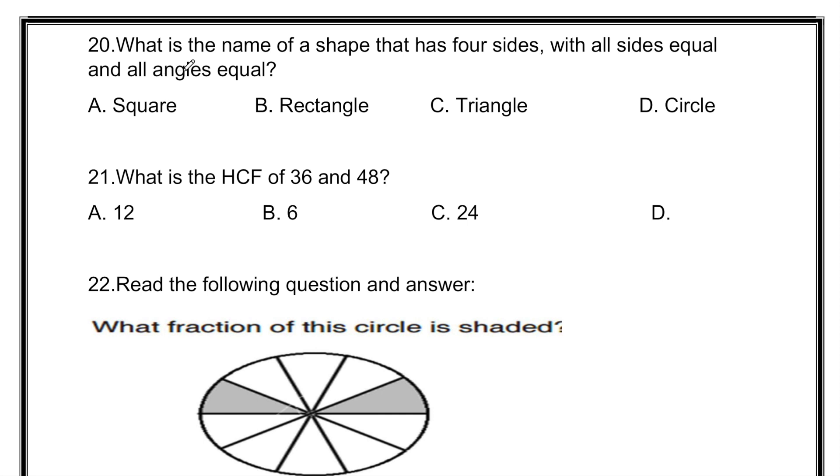What is the name of a shape that has 4 sides with all sides equal and all angles equal? It is a shape that has 4 sides and all the sides are equal with the same angles. That means a square because it has the same angles. The angle that a square has is the right angle.